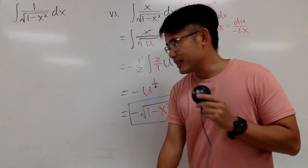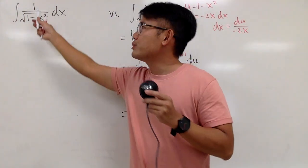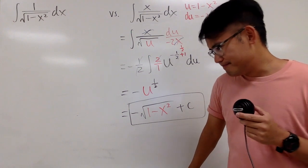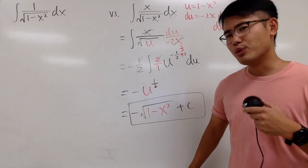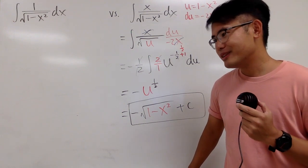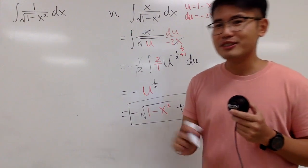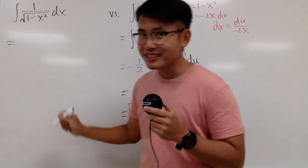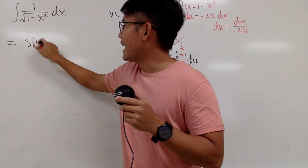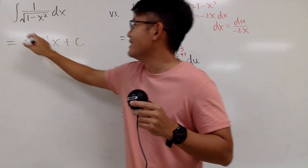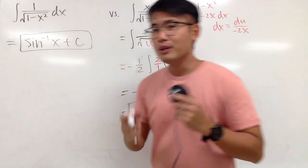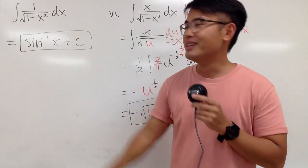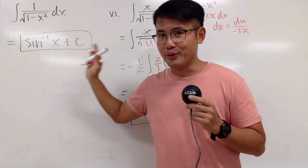Now you may be wondering, how can we do the first one? Because we don't have any x on the top. So is this so much more difficult? In fact, this right here is so much easier because the answer is just the inverse sine of x plus C. You just have to know your derivative table really, really well — the derivative of inverse sine x gives you that. That's it.